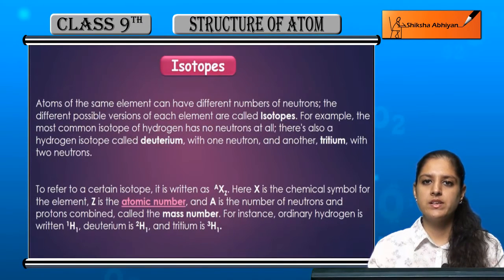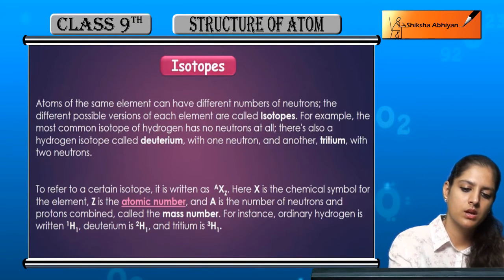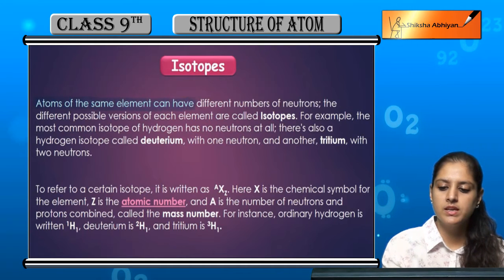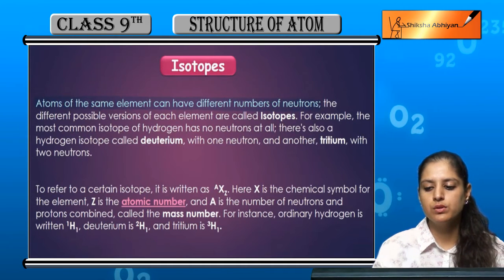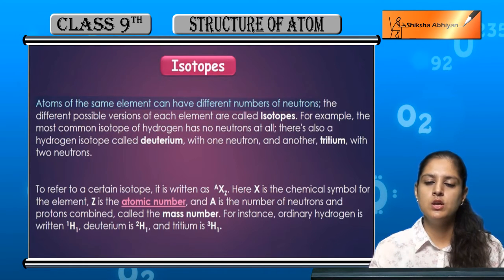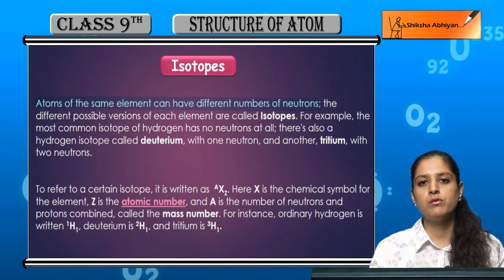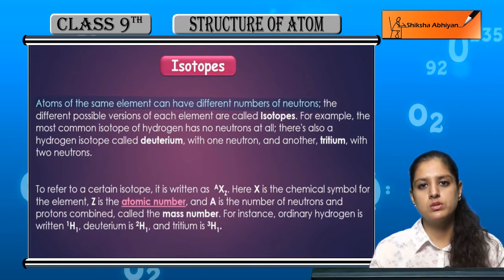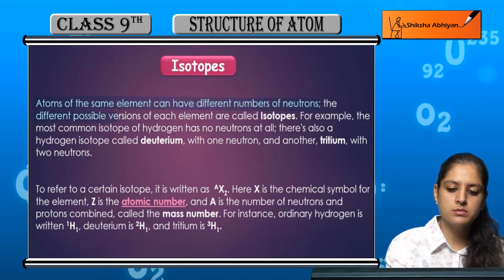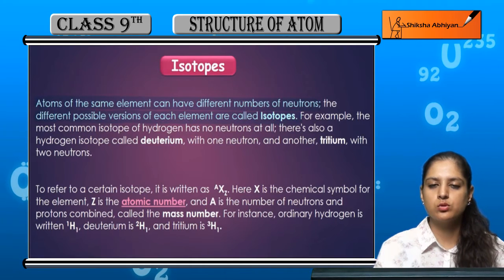Now let us see what isotopes are. Atoms of the same element can have different numbers of neutrons, so these different possible versions of each element are called isotopes.